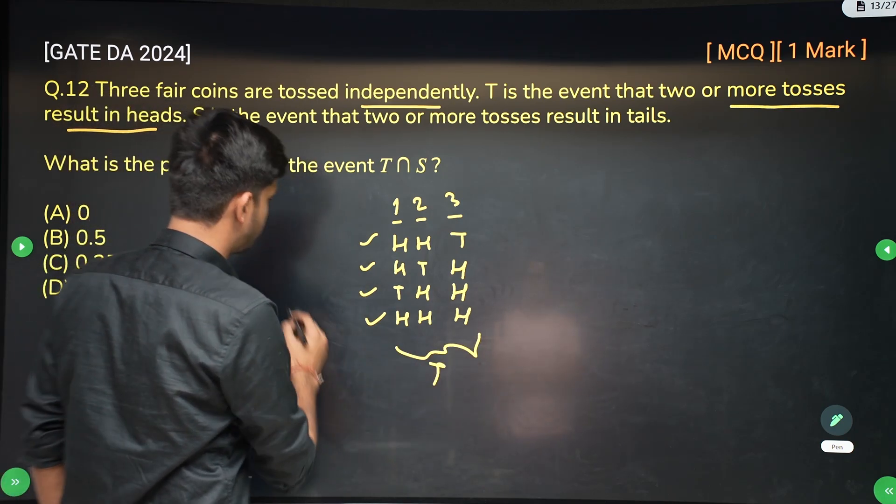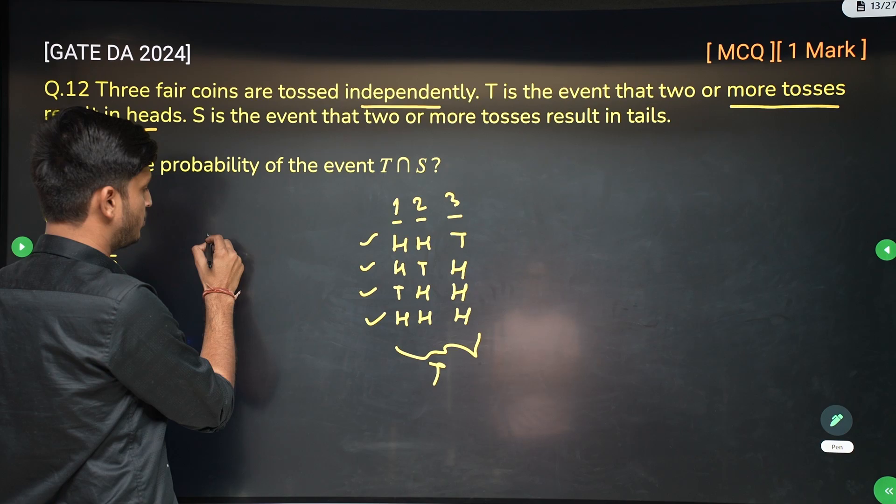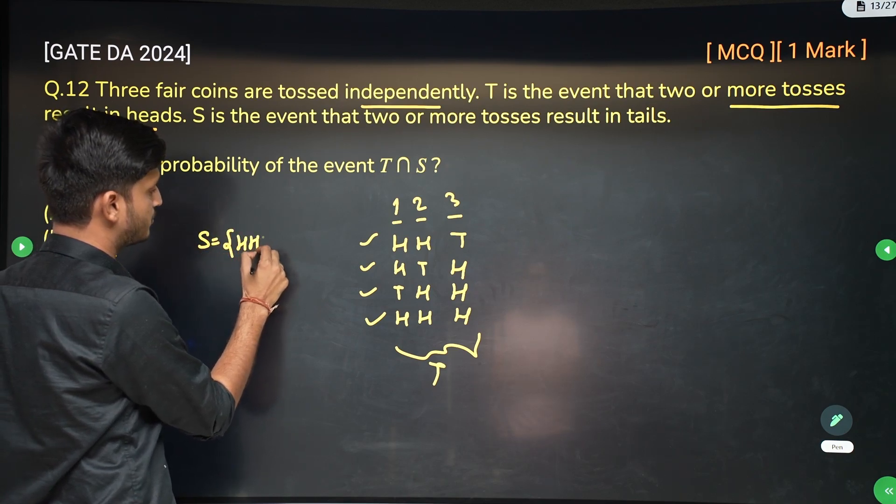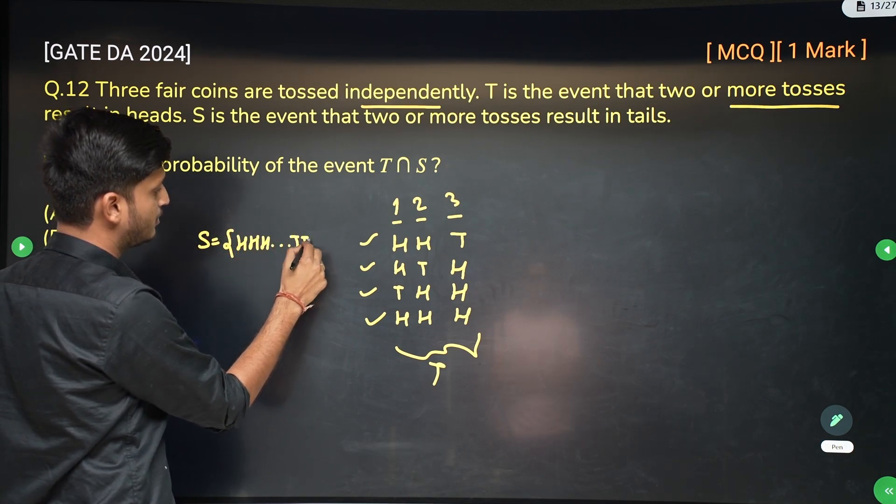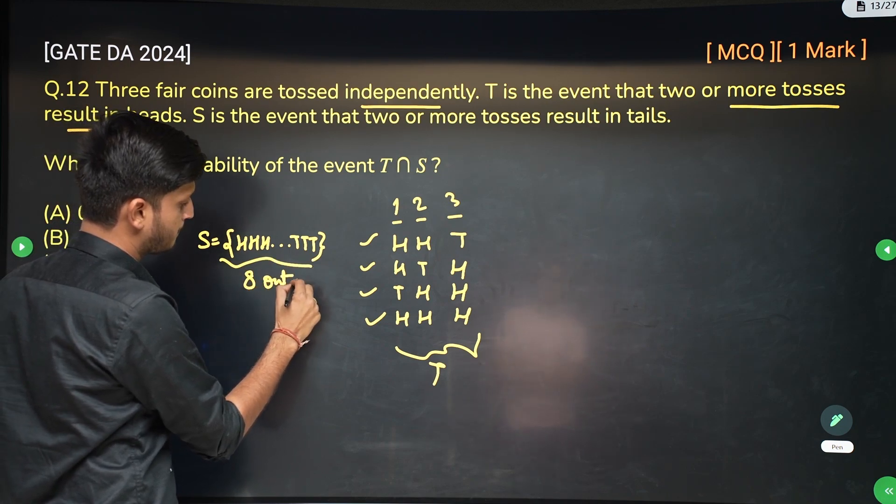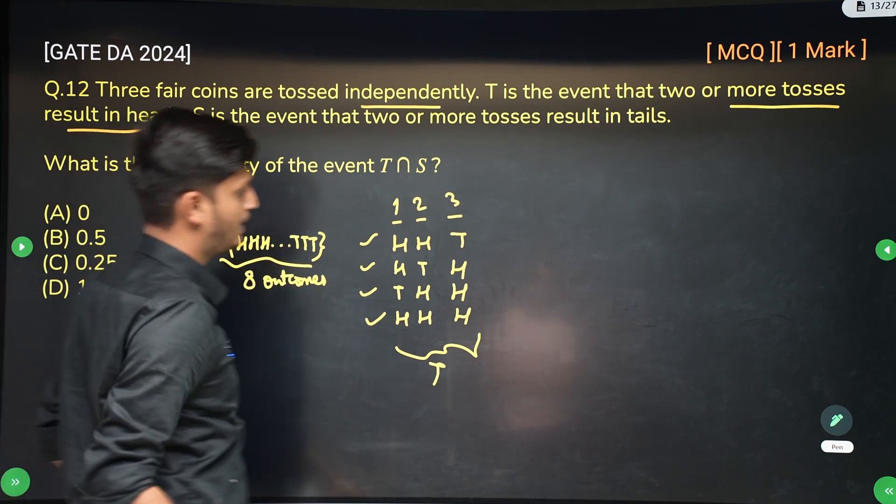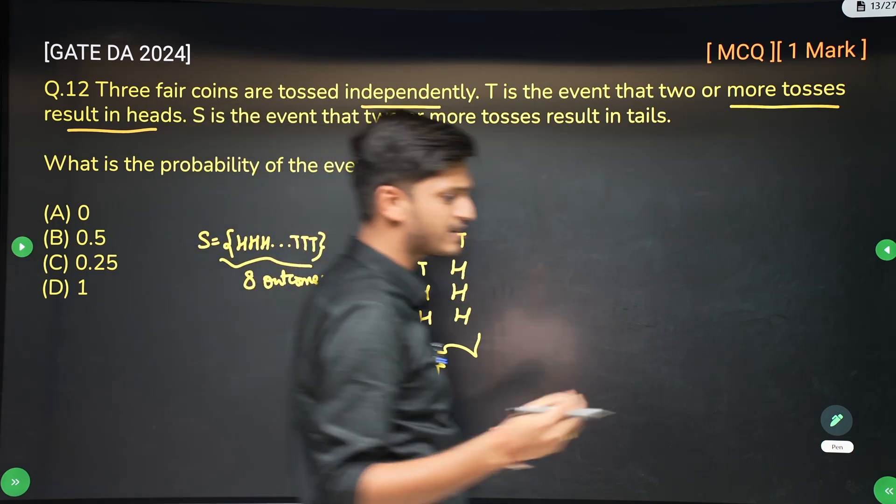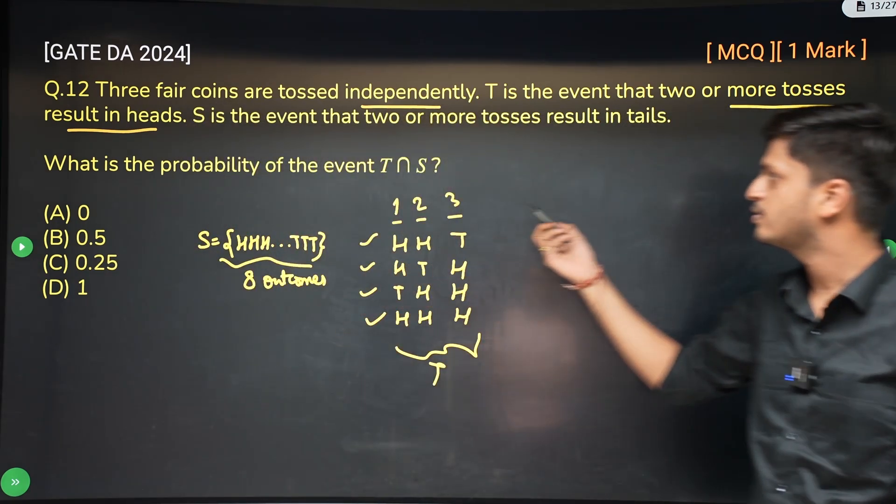We know that the sample space contains eight outcomes, right? You can very easily say that the sample space contains eight outcomes from head-head-head to tail-tail-tail. It has eight outcomes. And this is your event T. Any event is just a subset of the sample space.